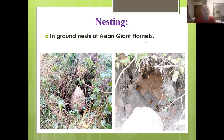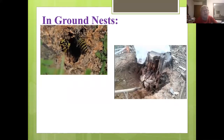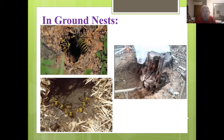Both of these are in-ground nests. You can see the hornets waiting at the edge of the nest — they're guarding, watching for anything that might come by that might disturb the nest. Here are males lined up at the mouth of the nest waiting for the females, which we'll talk about when we discuss the life cycle.